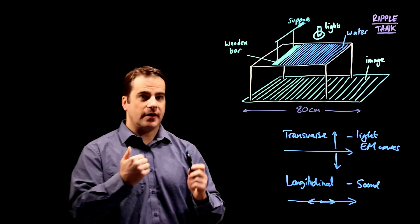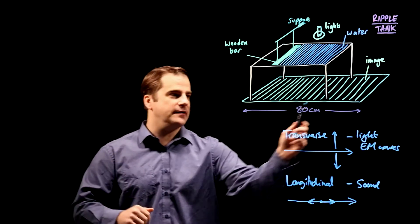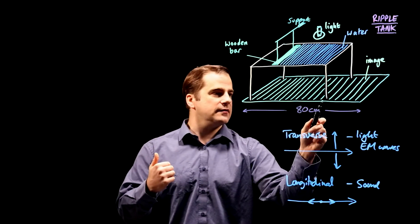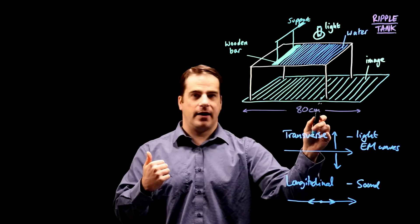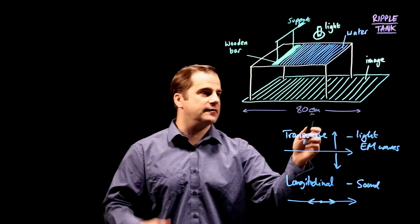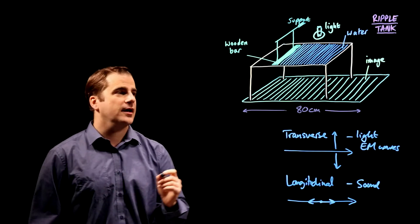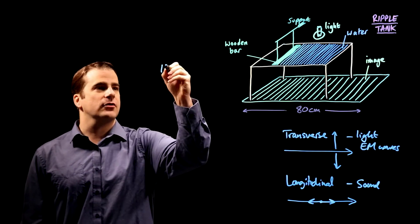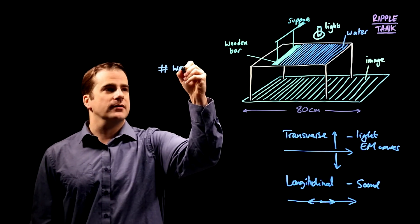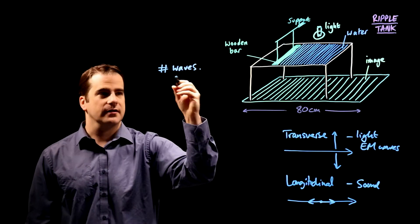So start the stopwatch, start counting, pick a point, count the number of waves that go by in a certain time, say 10 seconds, stop the stopwatch after 10 seconds and make a note of the number of waves. So you'll have a recording of the number of waves and the time.